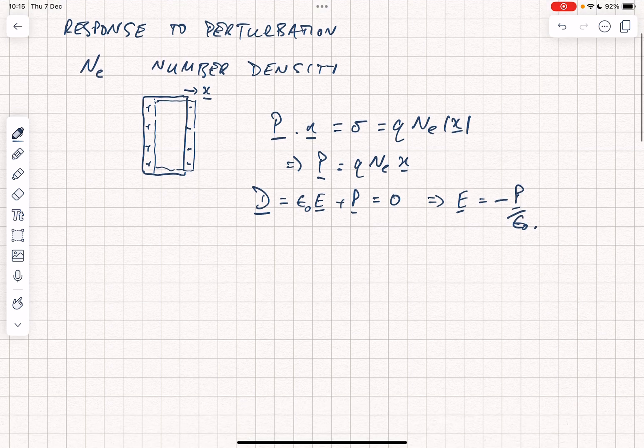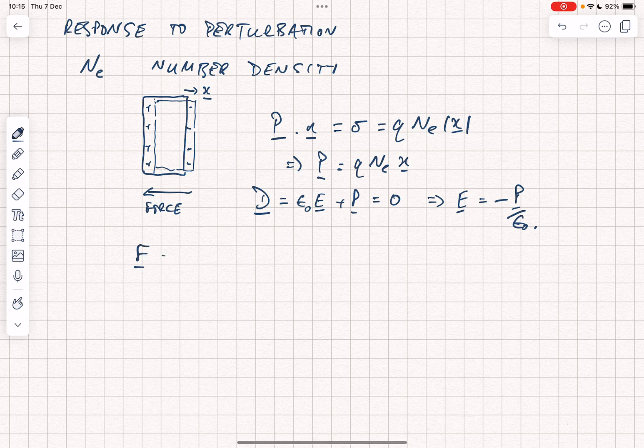When we now come to think about the force on the system, there will of course be a restoring force pushing the electrons back. We write F is equal to Q E, which is equal to minus Q squared Ne X over epsilon 0.